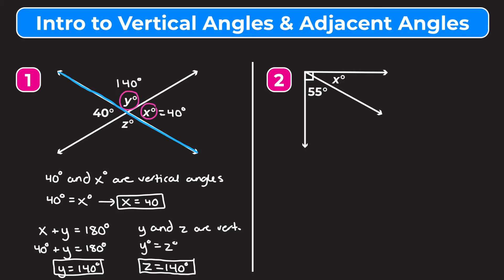Now let's look at example two. We don't have any lines fully crossing over each other, so there are no vertical angles — we'll use adjacent angles. The angle measuring x degrees and the angle measuring 55 degrees are adjacent and form a right angle, as shown by the small square, meaning they add up to 90 degrees. So x plus 55 equals 90, and subtracting 55 from both sides gives x equals 35 degrees.